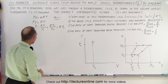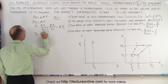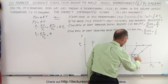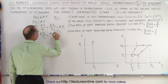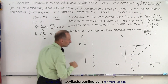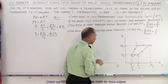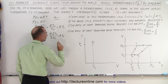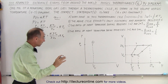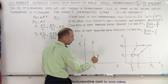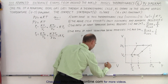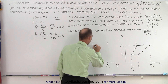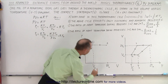Now let's find P₂. P₂ = RT₂/V₂. T₂ is twice T₀ and V₂ is twice V₀, so P₂ = R(2T₀)/(2V₀). The twos cancel, giving us P₀ again. So when we go from state one to state two, the pressure doesn't change but the volume doubles to 2V₀. This gives us a horizontal isobaric line on the PV diagram from state one to state two.